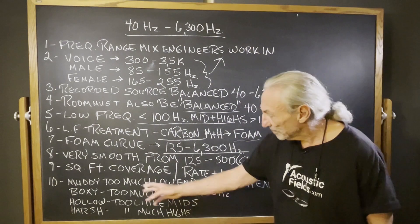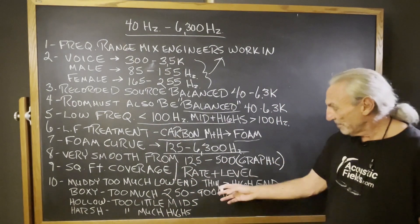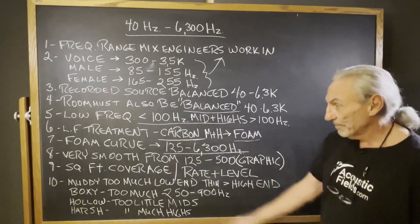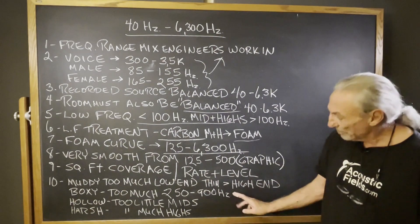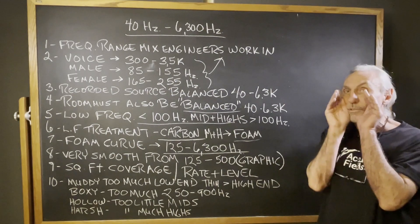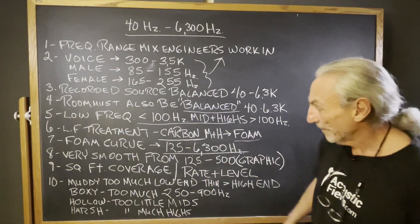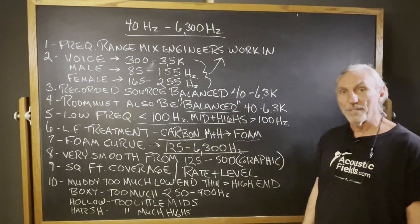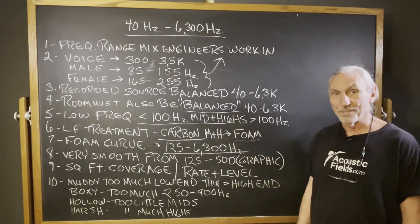So we know some of the terms. Muddy — you've heard that one — means too much low end. Thin means too much high end. Boxy means too much in that 250 to 900 Hz region; if things sound boxy, that's what you've got going on. Hollow means too little mids, and harsh obviously refers to the brightness of the highs. So there are even terms for things that aren't balanced, and that's what we need to be focused on.